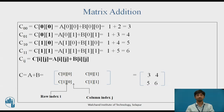The first row, first column element of A — that is A[0][0] — is added with the first row, first column element of B — that is B[0][0] — and stored in the first row, first column element of C — that is C[0][0]. Similarly, the first row, second column element of A — that is A[0][1] — is added with the corresponding element of B.